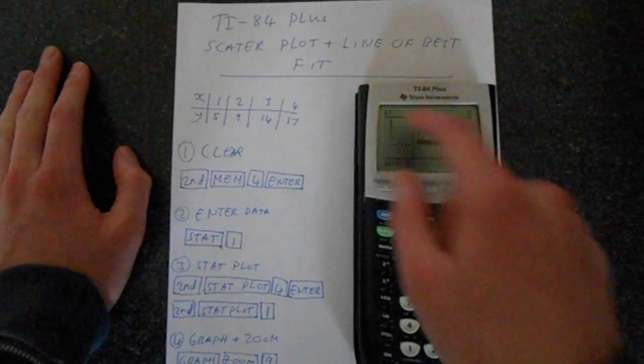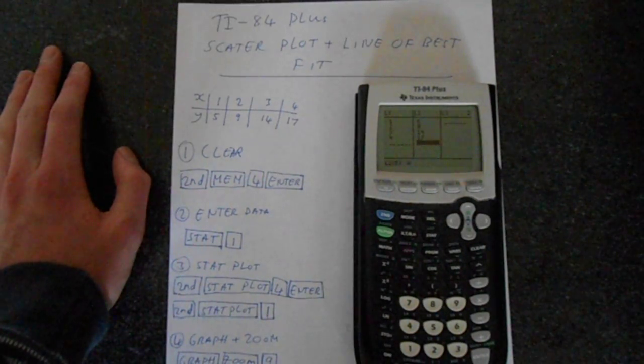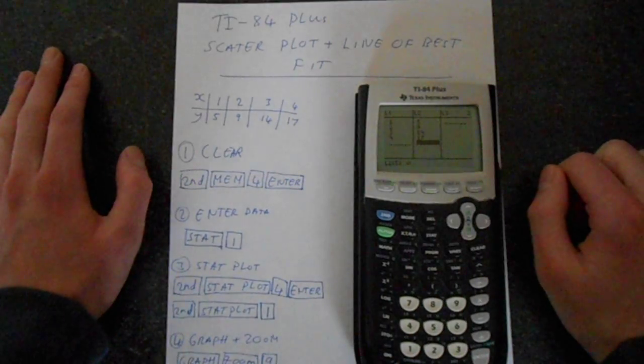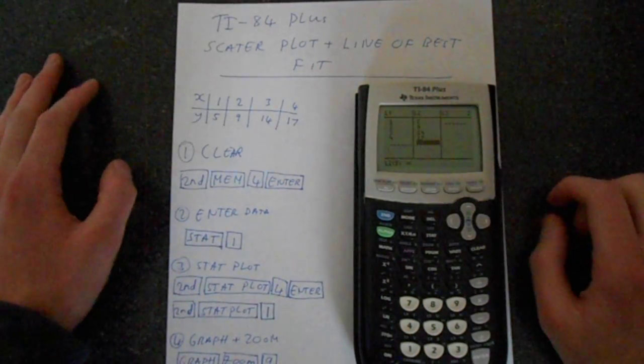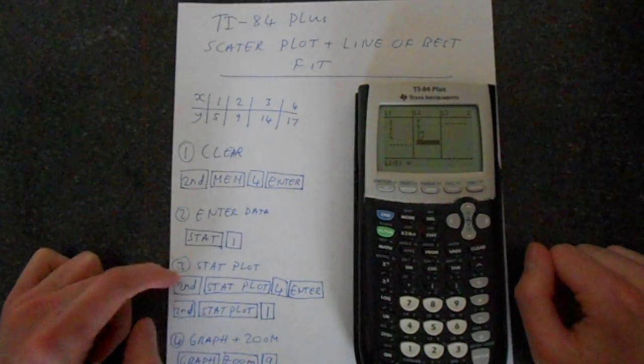That's how the calculator thinks about it. Make sure that these are list 1 and list 2. If they're not, then follow the link in the description to a video that will show you how to sort that problem. The common problem people have is they'll have deleted one of the list names. So let's just plot what's in here.